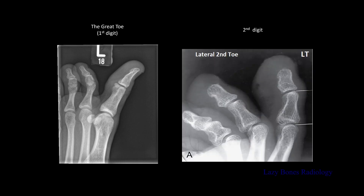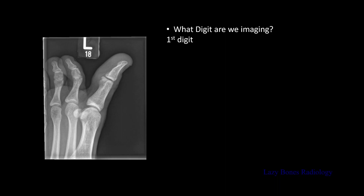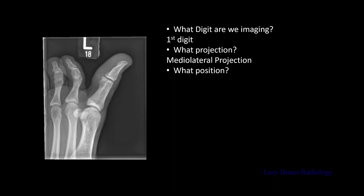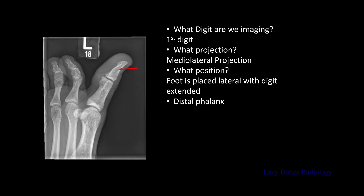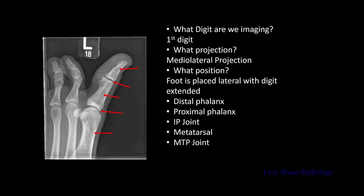Here are some examples. As you can see on the right hand side, this is the second digit in profile, while on the left hand side is the great toe, or the first digit. Make sure to isolate the digit of interest and remove the other digits out of the way in order to have a diagnosable image. Now let's practice. What are we imaging? This is the first digit. What is the projection? This is a medial lateral projection. What is the position? The foot is placed laterally and the digit is extended. Now let's practice your anatomy: the distal phalanx, the proximal phalanx. In between them is the interphalangeal joint. The first metatarsal. The metatarsal phalangeal joint. And lastly the sesamoid bones.